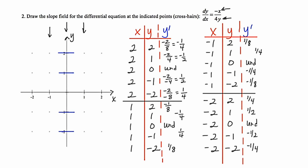Starting with (2, 2) where the slope is negative 1 fourth, I'll make that segment look like this. The next one is negative 1 half, which will be a little steeper. Then we have undefined slope, which means vertical. Then positive 1 half, and then positive 1 fourth.